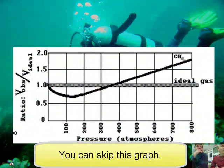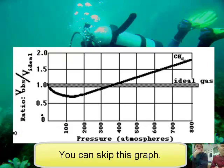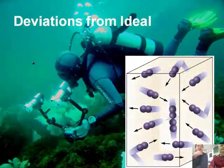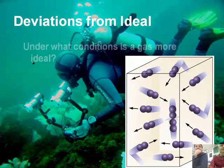If we look at this graphically, at the conditions we measure gases in, they're going to be close enough to ideal. But if I want to make a gas ideal — we talk about gases like oxygen and nitrogen in this room, but there are gases that are not ideal.